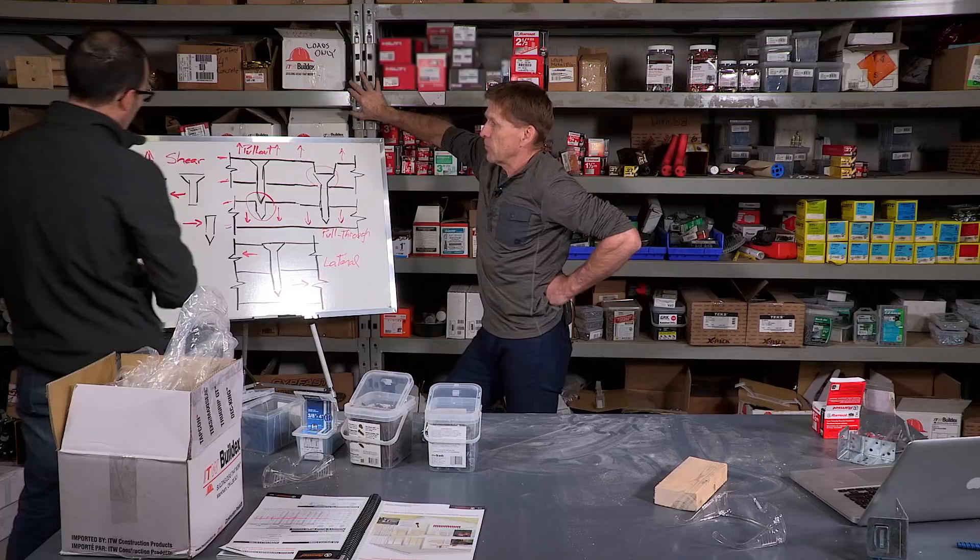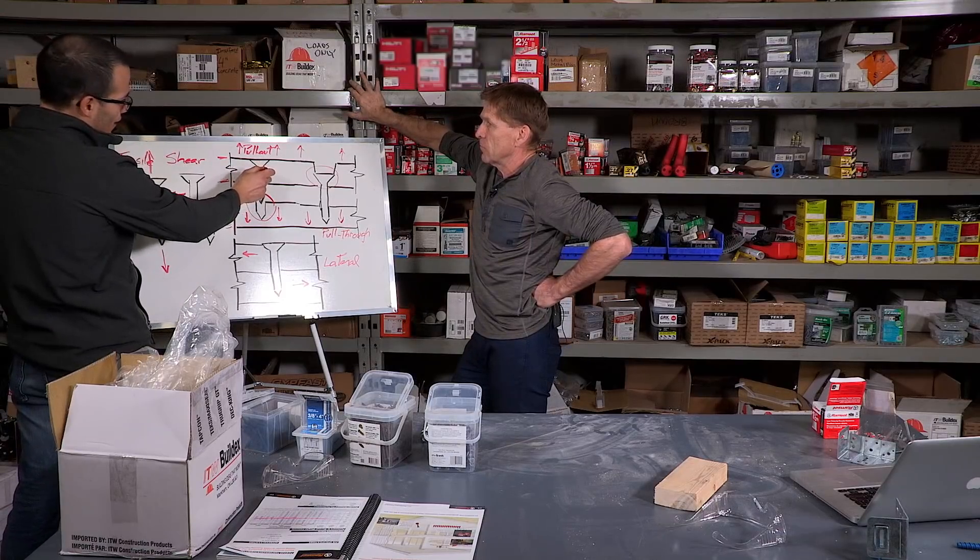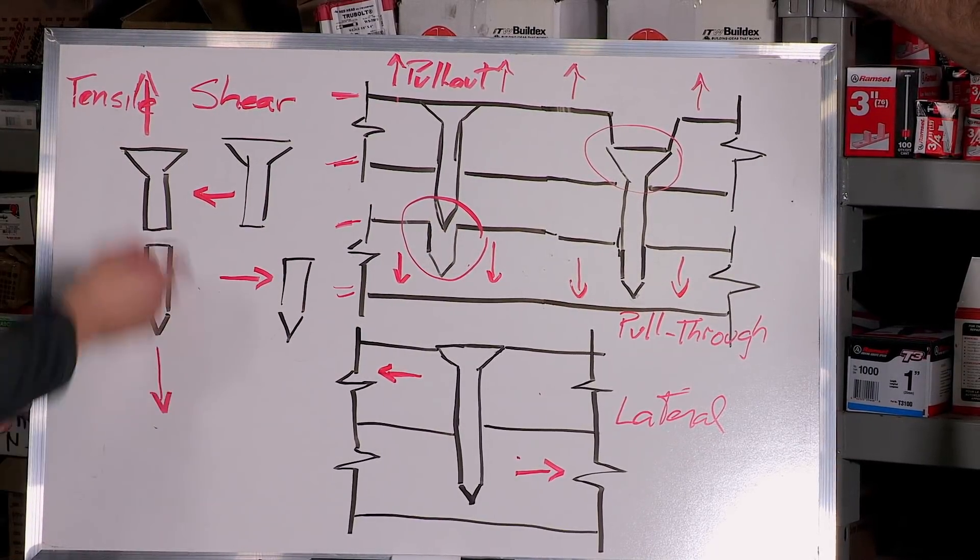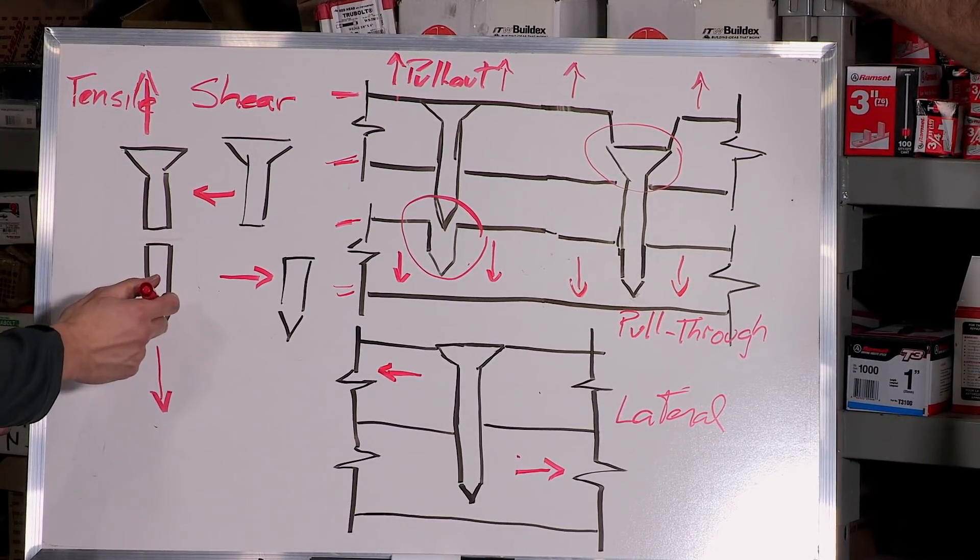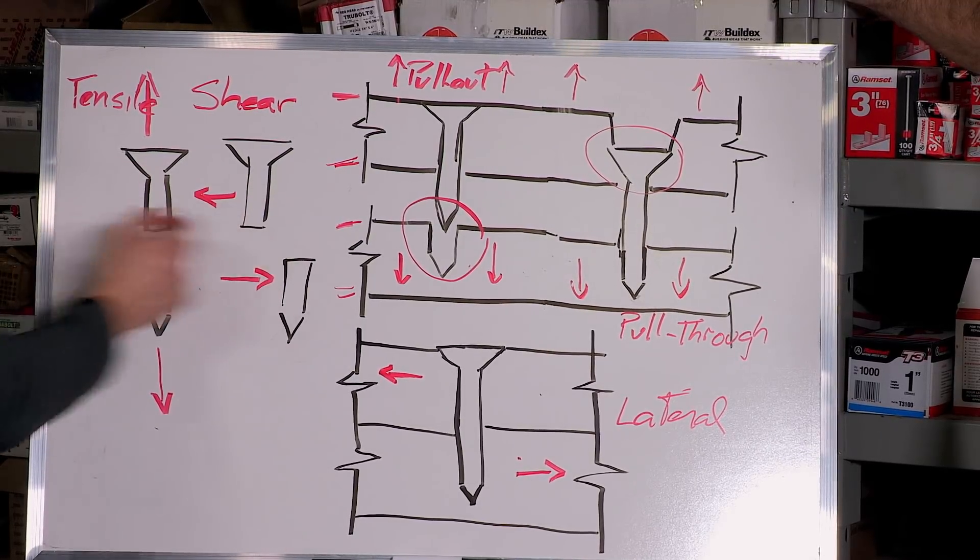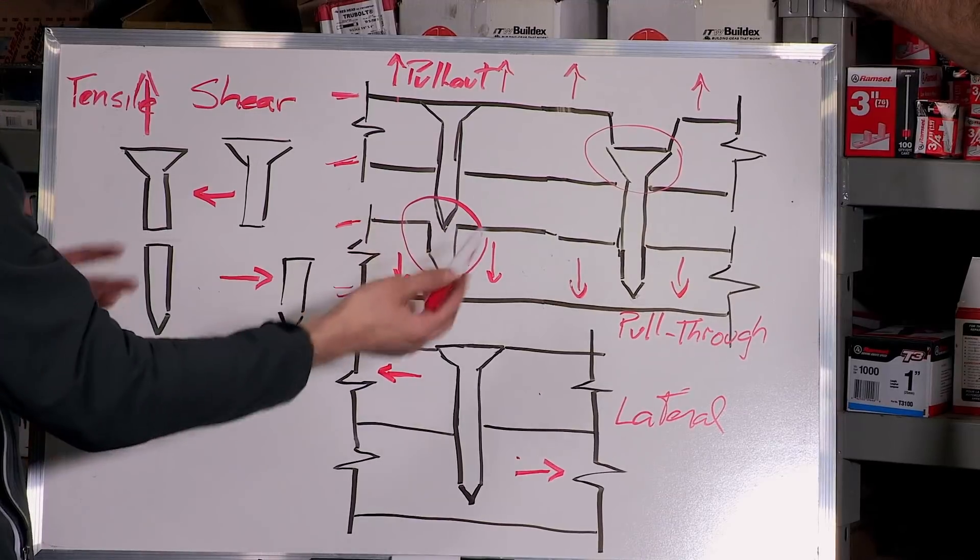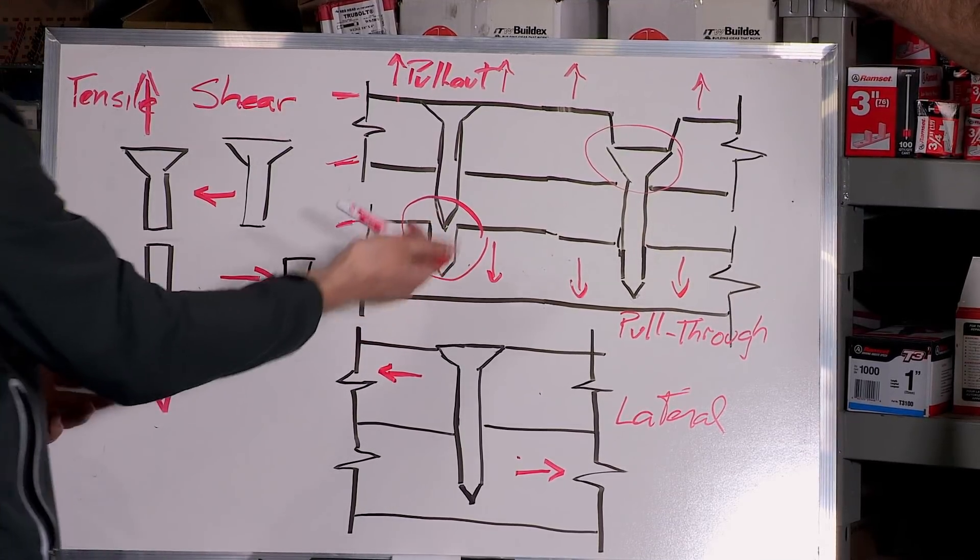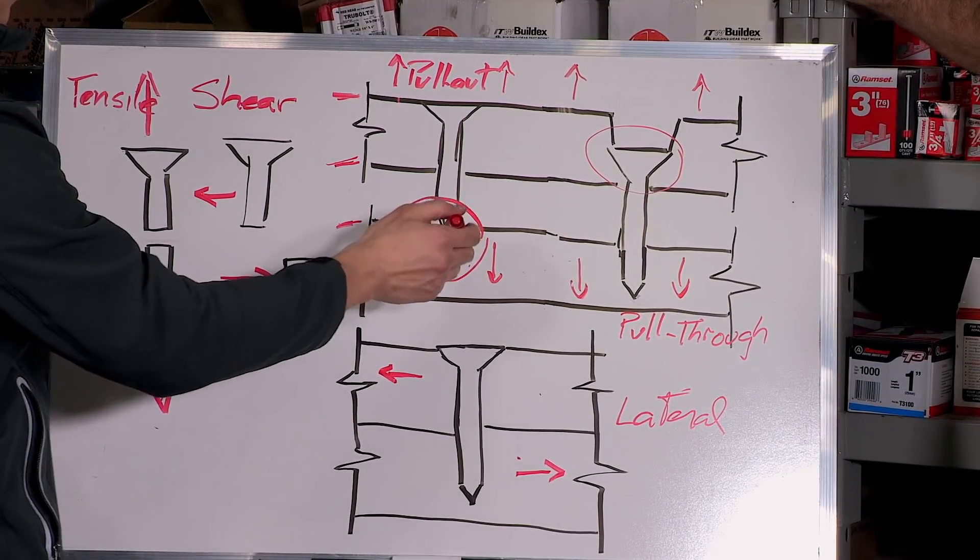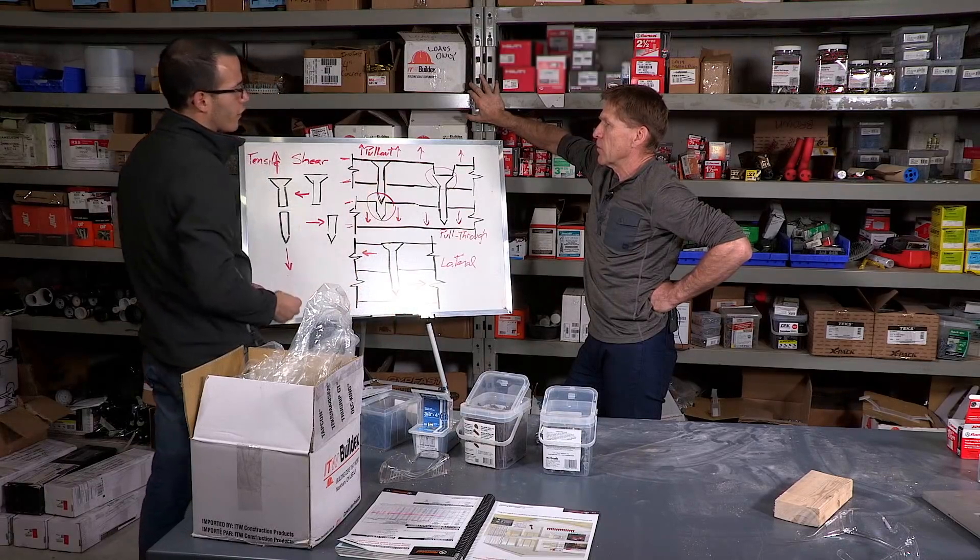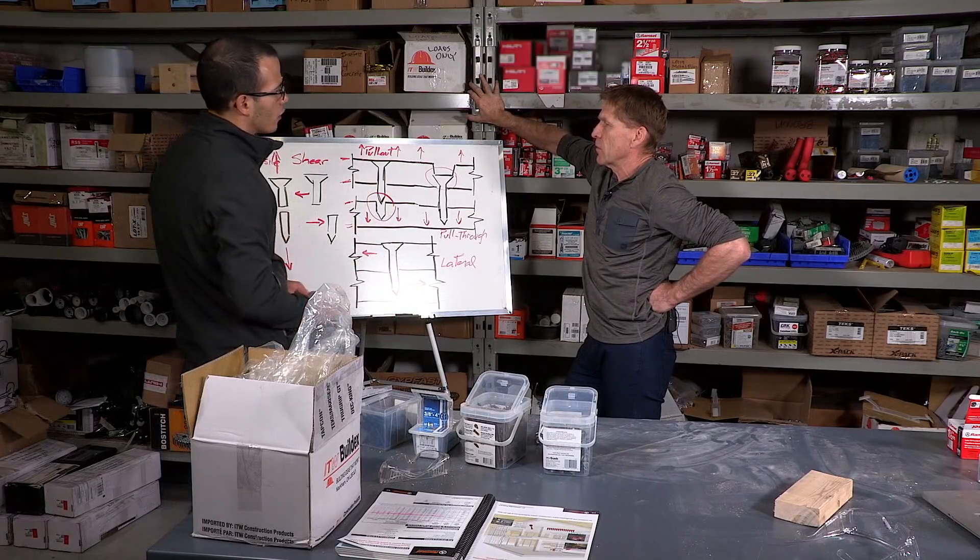You definitely don't want your screw breaking before it pulls out, and that's going to be determined by this. So if the steel is not strong enough, then this might happen before this, and you definitely don't want the screw to break. Obviously you want it to hold as much as it can to the main member, but ultimately the wood's going to give in and eventually the failure might happen if you get to a certain load.